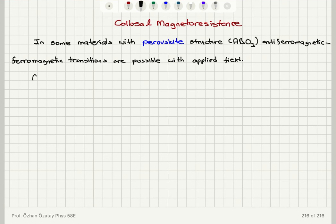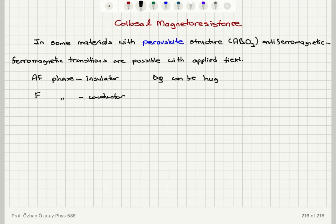The antiferromagnetic phase is an insulator and the ferromagnetic phase is a conductor. Therefore, the change in resistivity Δρ can be huge, making these materials good candidates for magnetic field sensors.